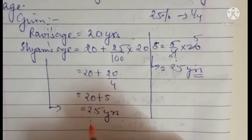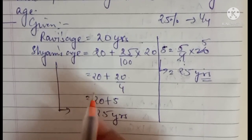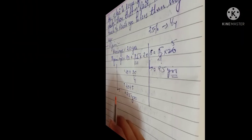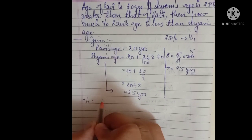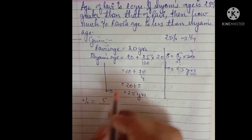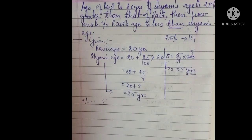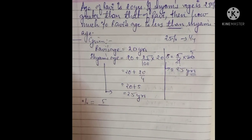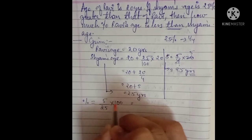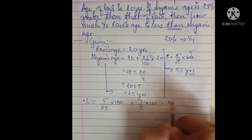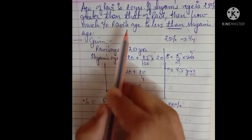Now we have both ages: Ravi's age is 20 and Shyam's age is 25. We need to find how much percent Ravi's age is less than Shyam's. The difference between the two ages is 5. Since we are comparing Ravi to Shyam, the denominator will be Shyam's age, which is 25. So 5 upon 25 equals 20 percent.